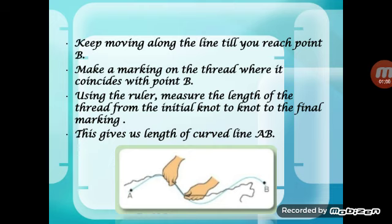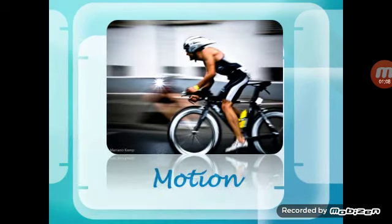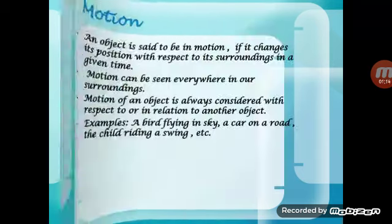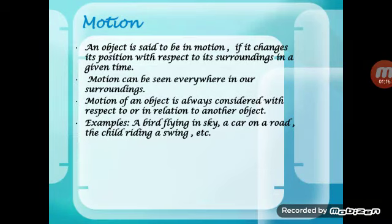Using a ruler, measure the length of the thread from the initial knot to the final marking — this gives us the length of curved line AB. Those were the two methods: using a divider and using thread. Now we move on to the second part of the lesson, that is motion. An object is said to be in motion if it changes its position with respect to its surroundings in a given time.